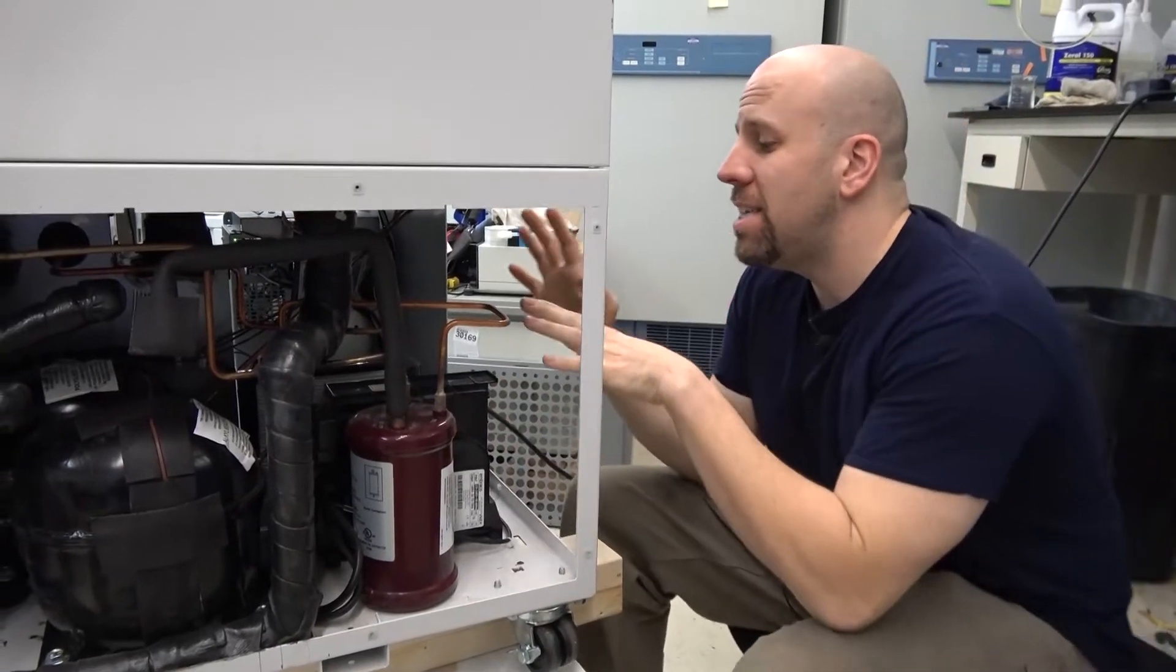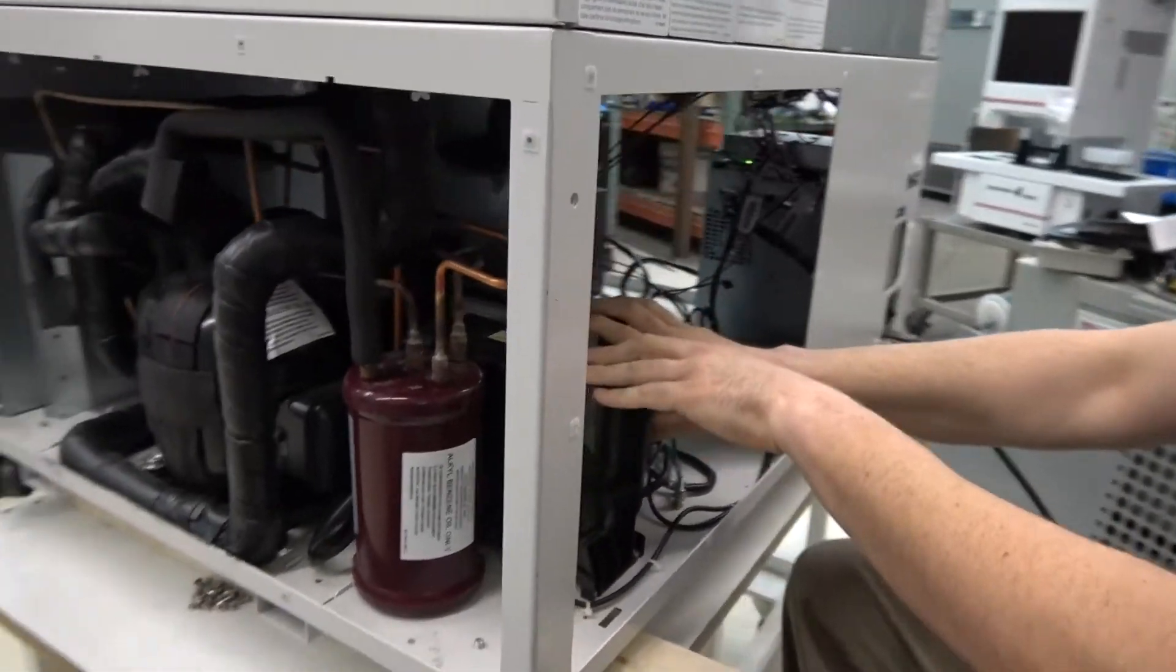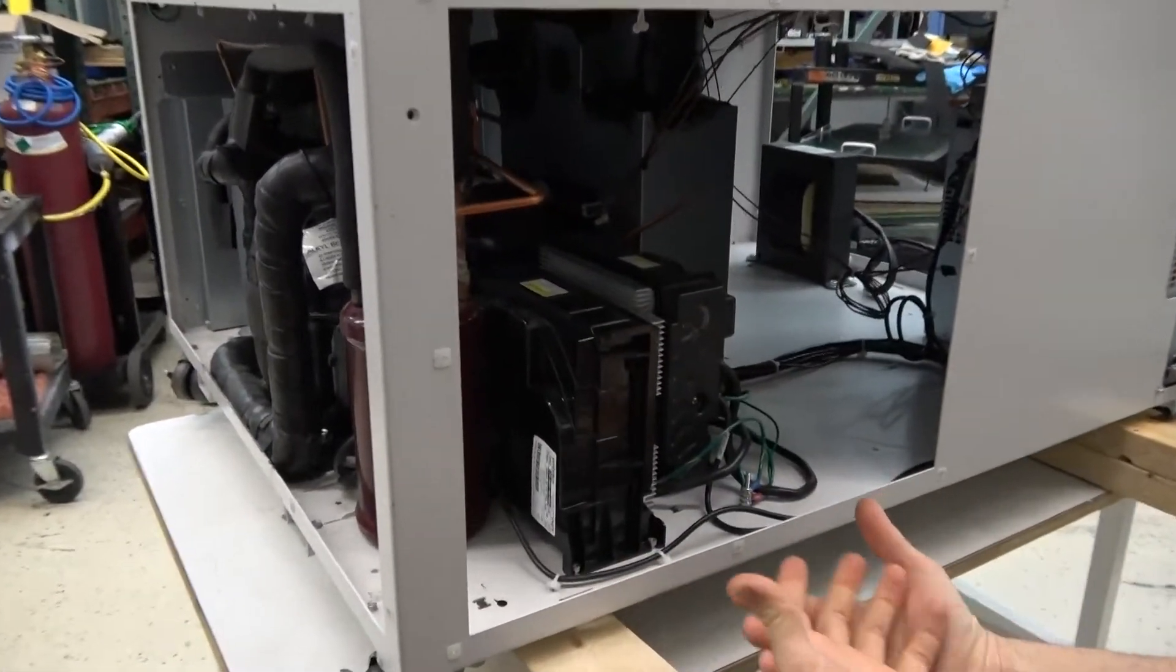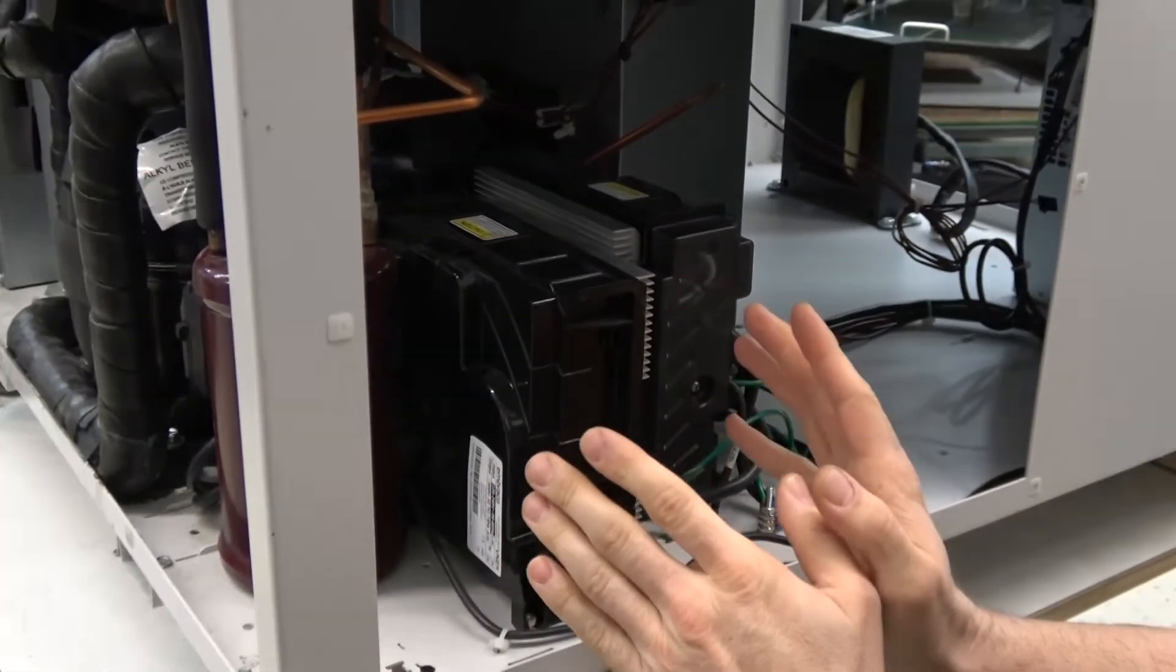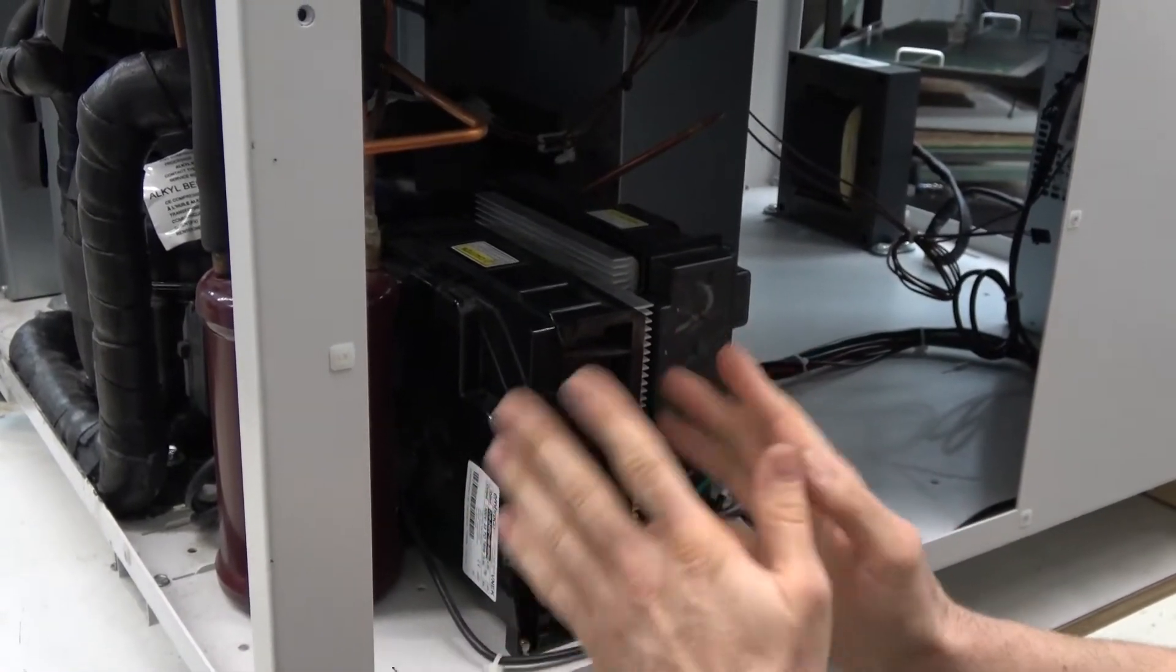is this has, for each stage of the refrigeration system for both compressors, essentially what is a variable speed drive. They call it an inverter. And these control the speed of the compressor.